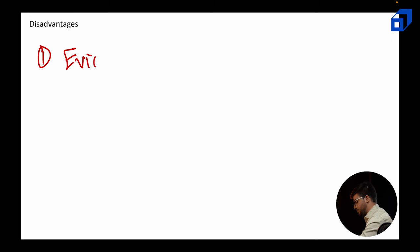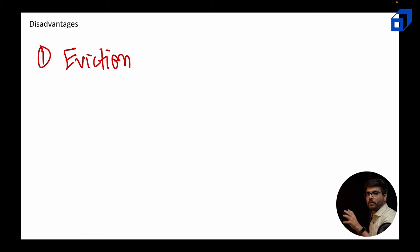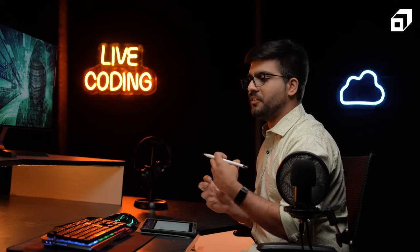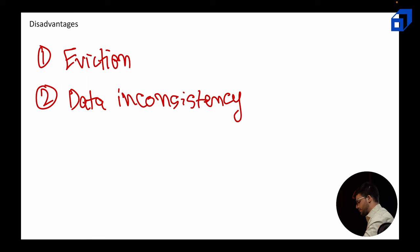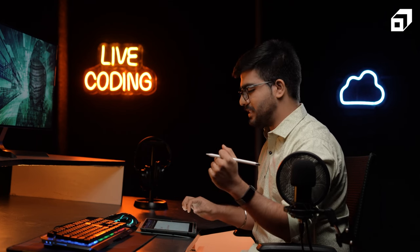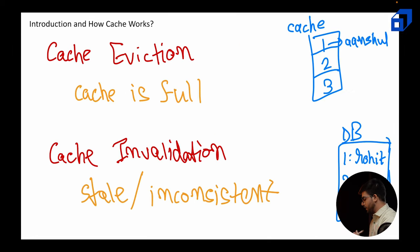Now let's understand the disadvantages. One is eviction: when cache gets full, we need to get rid of some data point to make space for new data fetched from the database. If the cache eviction policy is not designed properly, it can lead to a lot of inefficiencies and the performance optimization we expect from cache might not happen. That is why we want to maximize cache hits over cache misses. The second disadvantage is data inconsistency — which we already discussed. If something is updated in the database, we want the fresh information in the cache, or we don't want that stale information in the cache at all.